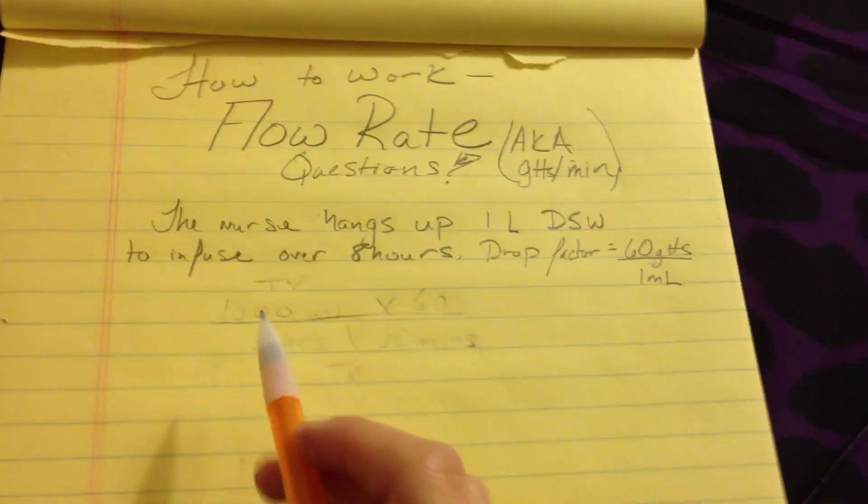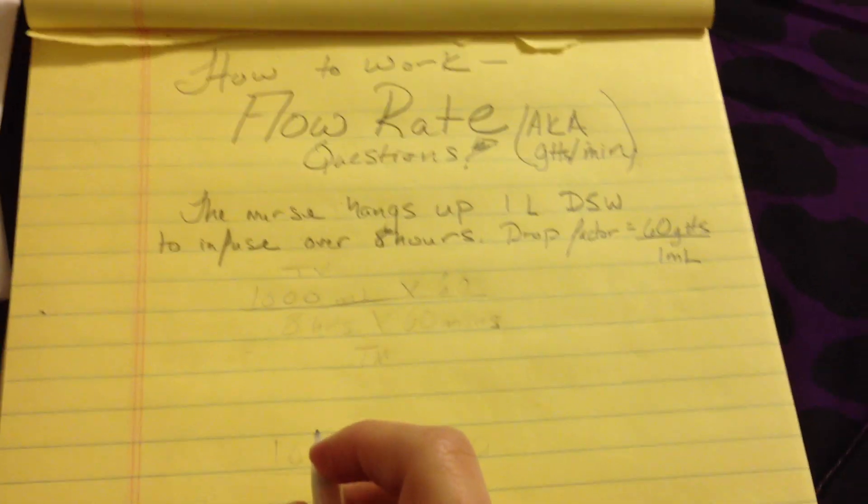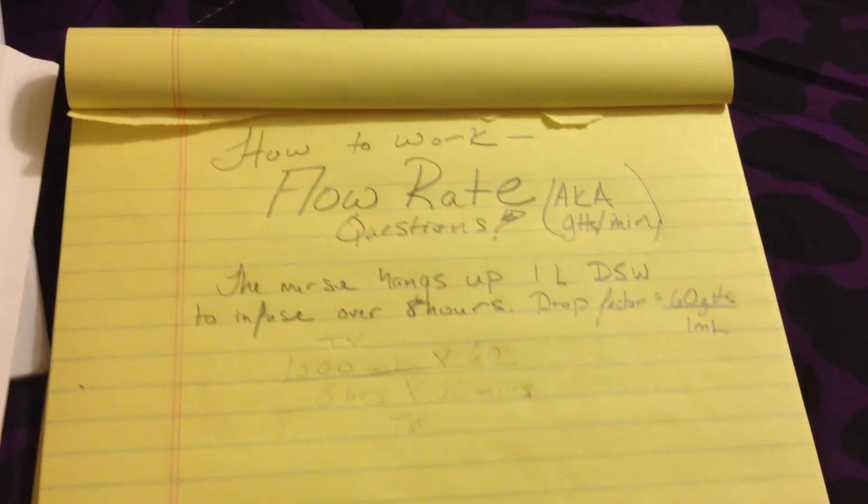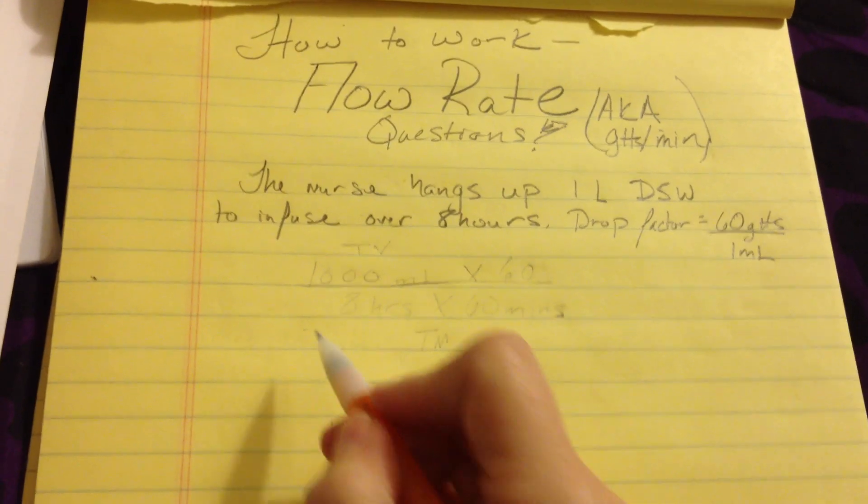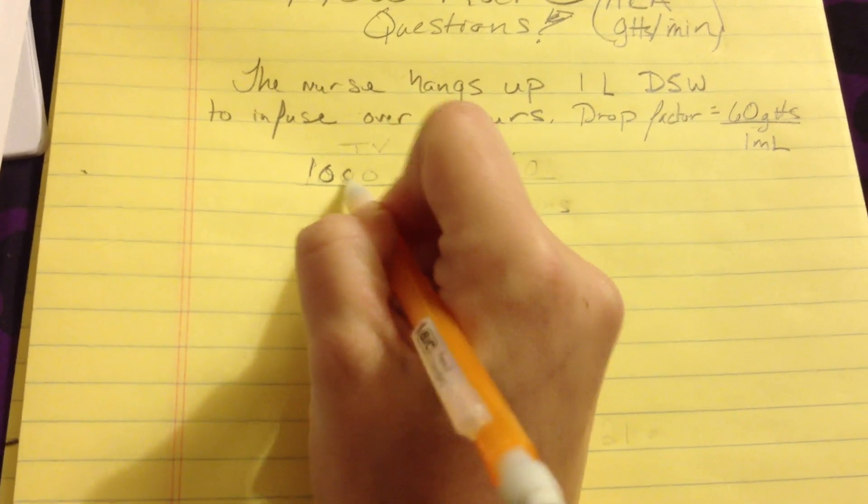So we're going to start with this sample question right here. The nurse hangs up 1 liter D5W to infuse over 8 hours. The drop factor, which is found on your tubing packaging, is 60 drops per 1 milliliter.